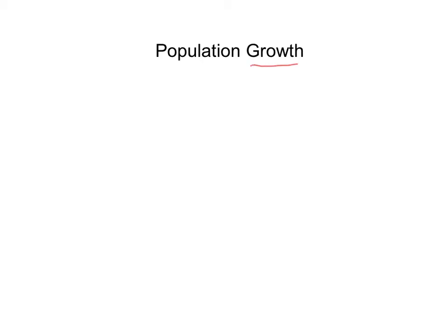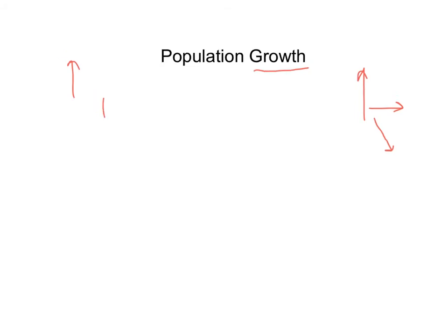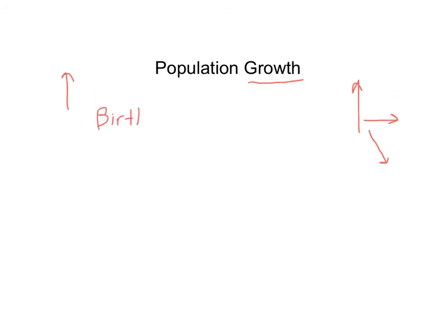Our next topic is called population growth. Is your population growing, staying the same, or actually shrinking? First, what makes a population go up? Whether it's people, rabbits, or birds — one thing that makes a population grow is births, which makes it go up. Another thing that makes a population go up is immigration. Immigration is when individuals move into a population. When people move to the United States from another country, that's immigration, and it makes the population go up.